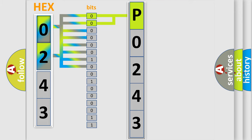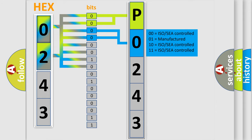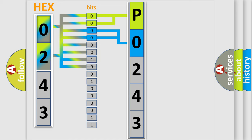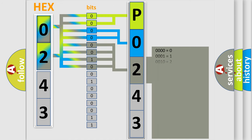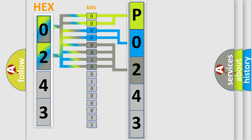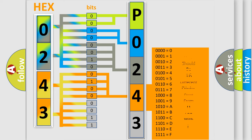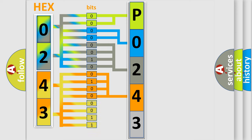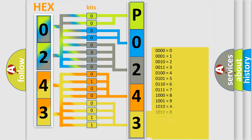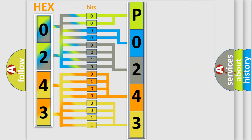The next two bits determine the second character. The last bits of the first byte define the third character of the code. The second byte is composed of a combination of eight bits. The first four bits determine the fourth character of the code, and the combination of the last four bits defines the fifth character. A single byte conceals 256 possible combinations.